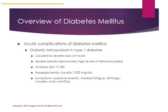Acute complications of diabetes mellitus have a sudden onset. Diabetic ketoacidosis in type 1 diabetes is caused by a severe lack of insulin and is characterized by severe ketosis — abnormally high levels of ketone bodies — and acidosis, defined as a blood pH of less than 7.3. Hyperglycemia typically shows blood glucose readings greater than 250 milligrams per deciliter. Other symptoms can include acetone breath, marked fatigue and lethargy, and nausea and vomiting.